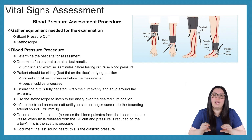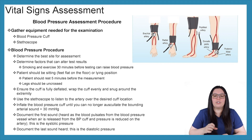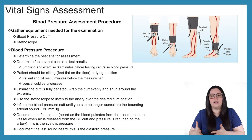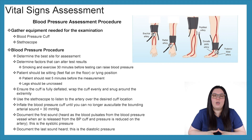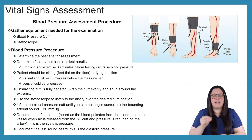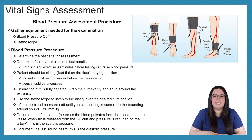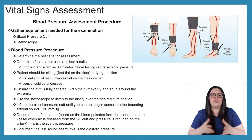Ensure the cuff is fully deflated prior to wrapping it around the extremity evenly and snug. Use the stethoscope to listen to the artery over the desired cuff location. As you inflate the blood pressure cuff, inflate it until you can no longer auscultate the bounding arterial sound. Once you no longer hear that sound, add 30 to the gauge reading to ensure you get an appropriate blood pressure reading. Document the first sound heard as blood pulsates from the blood vessel wall when air is released — this is your systolic pressure.